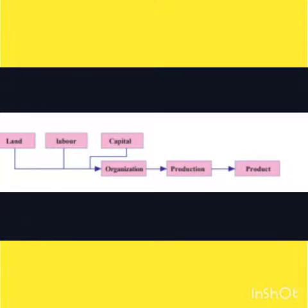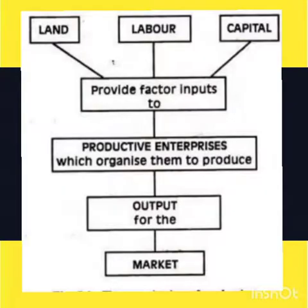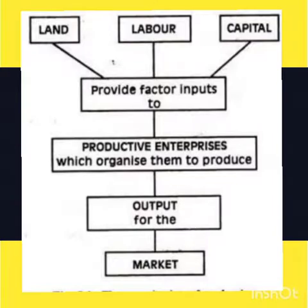The organizer brings together capital, labor, and land, organizes them, and it becomes a production process which at last results in a product. Profit is the reward for the organizer. The coordinated functioning of the factors of production leads to production, which is an economic activity and results in products. To satisfy human wants, products are essential, and this makes production a continuous process.